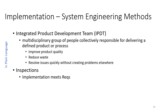There are four system engineering methods used during this process. The first two are the integrated product development team and inspections. The IPDT is a multidisciplinary group of people responsible for delivering the defined product or process. They ensure that the product meets the highest quality standards and that there's no waste in the production and implementation of the system.